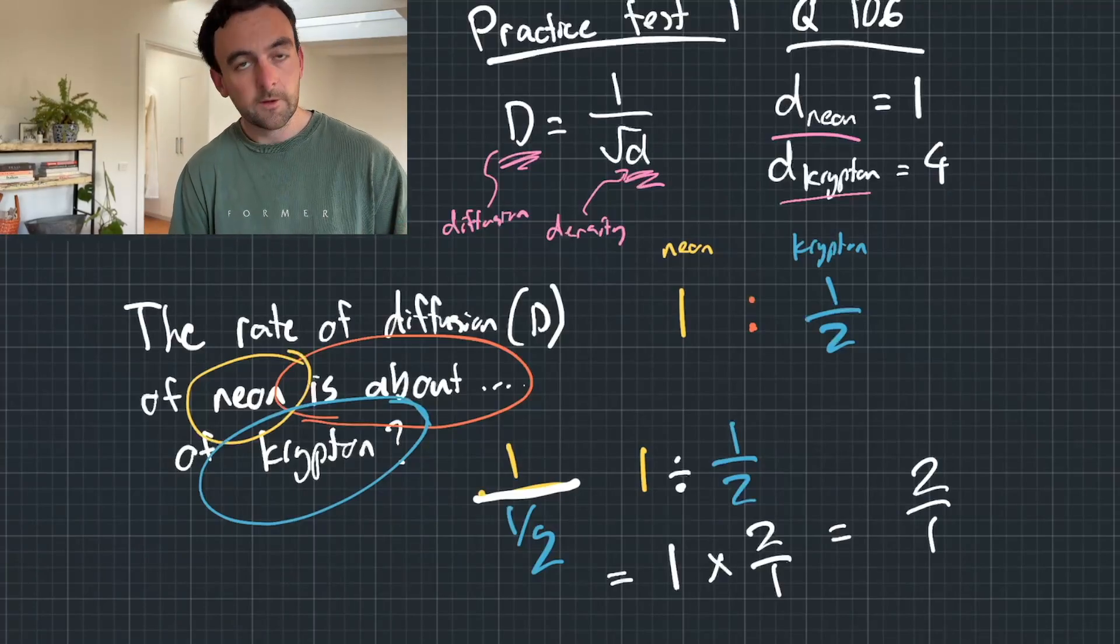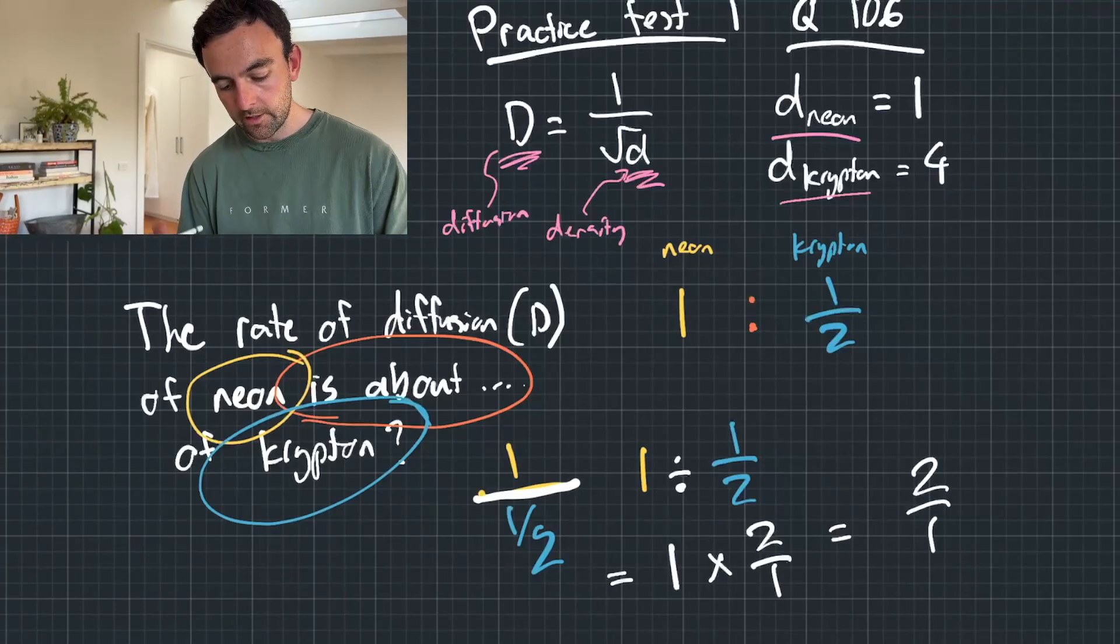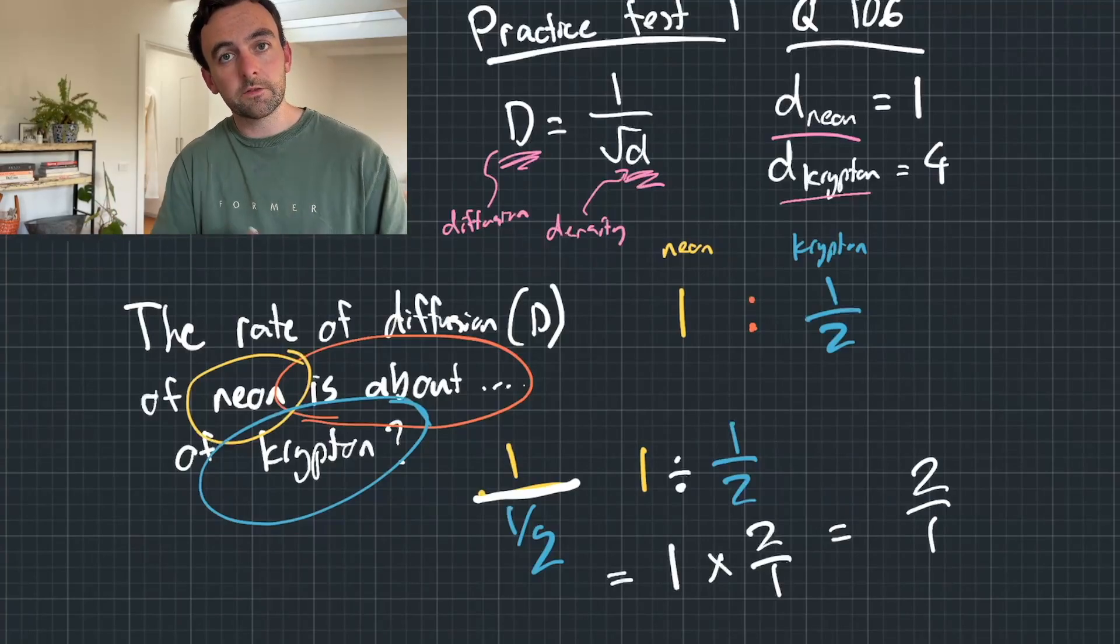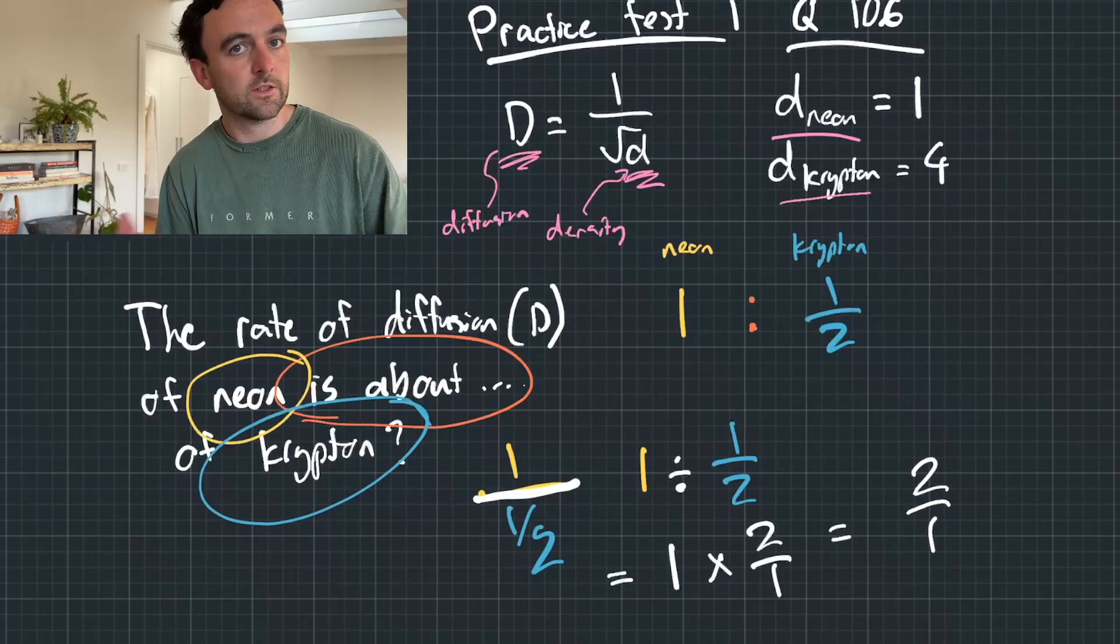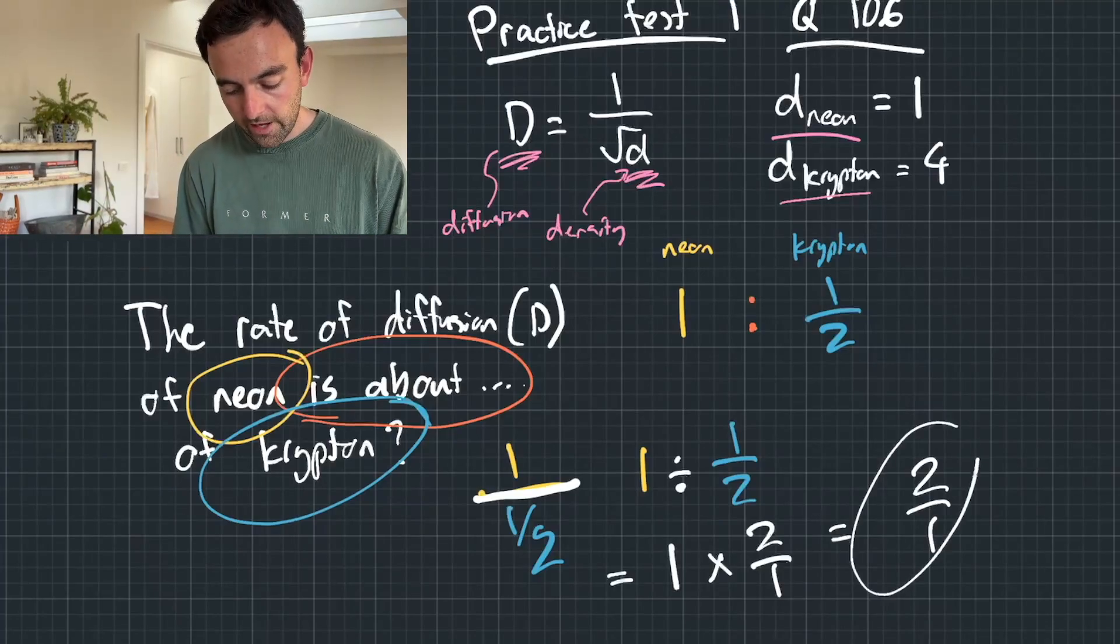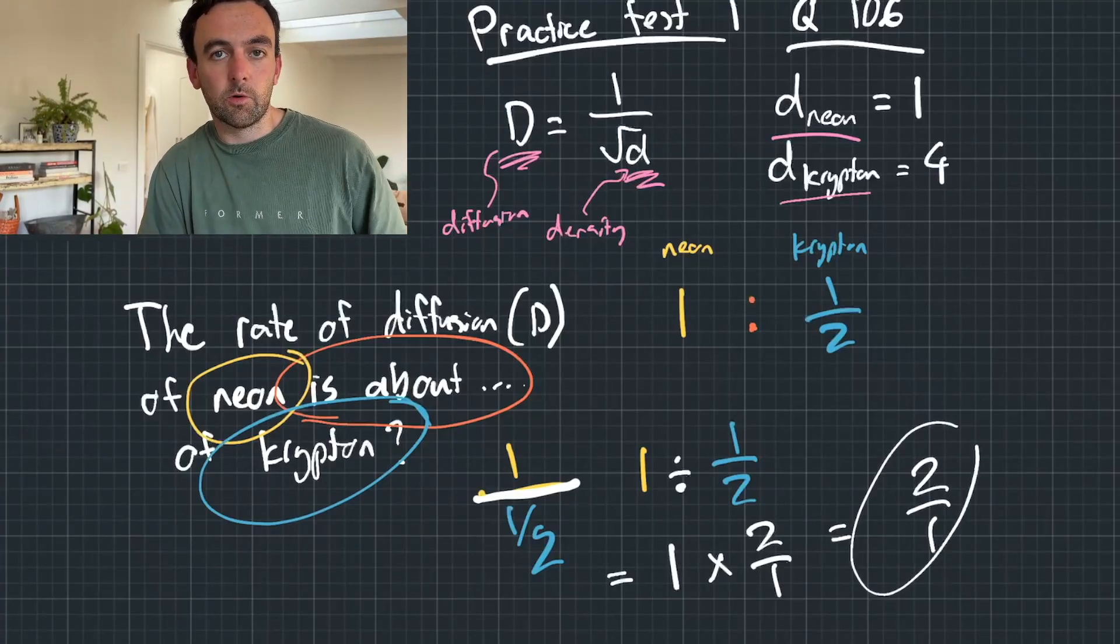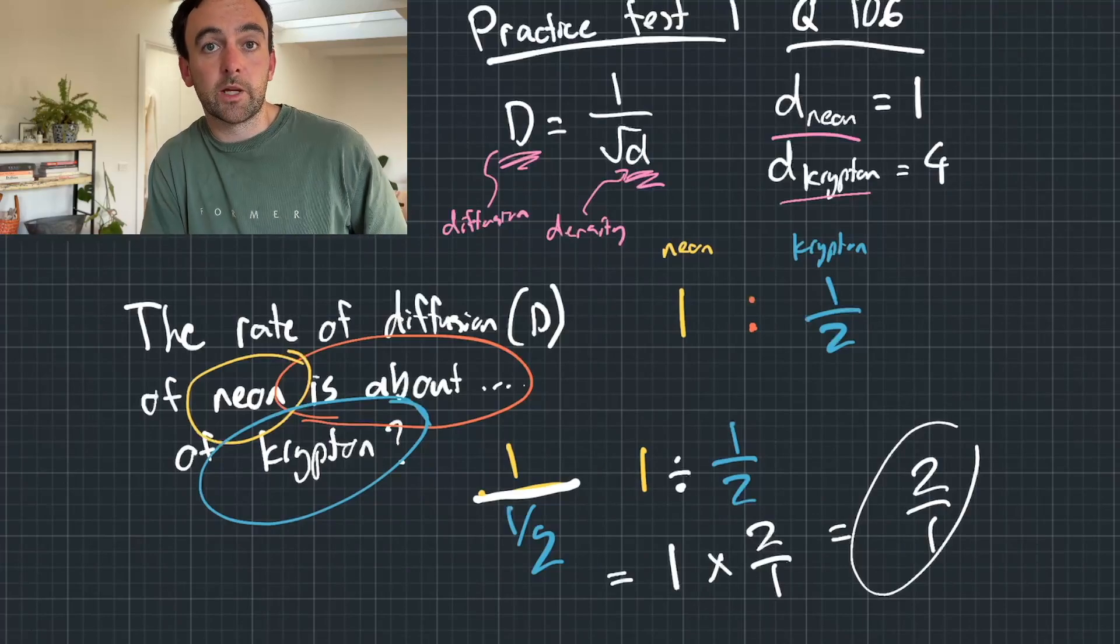So that's how we can work through that quite easily. Just work out what goes on the left, what goes on the right, and then put them into a fraction and divide it into one single number. And that will be your answer to what the relationship is between those two variables.